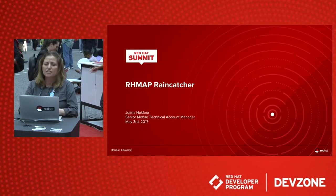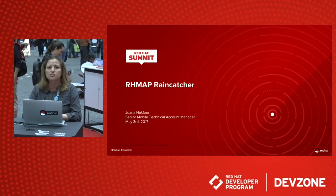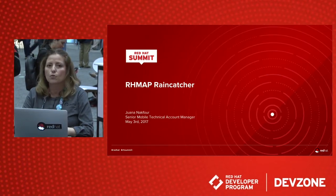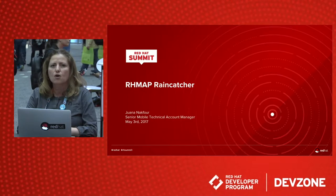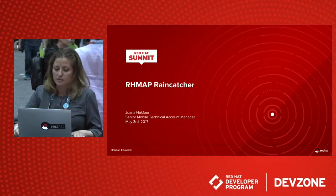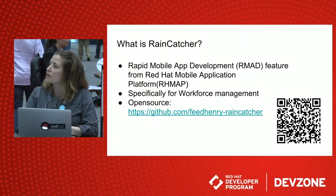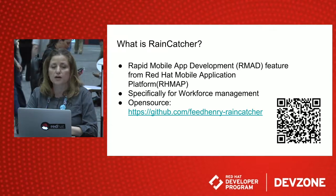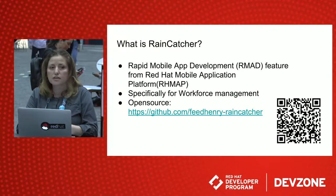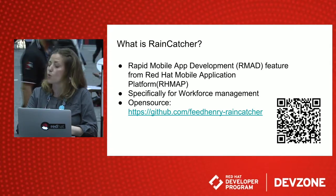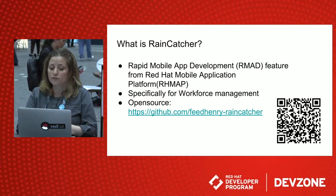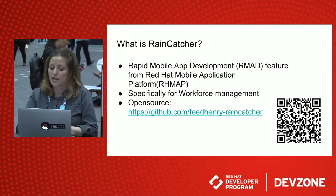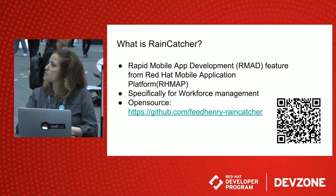I'm a senior mobile technical account manager here at Red Hat, and I'm here to introduce a special feature for Red Hat Mobile called RainCatcher. RainCatcher was specifically developed for workflow models and for enterprises that are working on workflow applications. In three bullets, we can consider RainCatcher as an RMAD feature — it comes with a lot of combined modules that help you build applications with many features quickly. It is specifically for workforce management. If you want to scan that QR code, that will take you to our open source GitHub repository to look at the code, and maybe you can contribute one or more modules to RainCatcher.